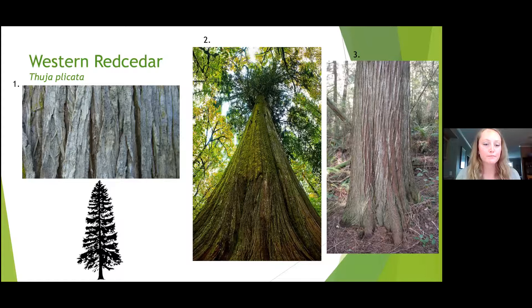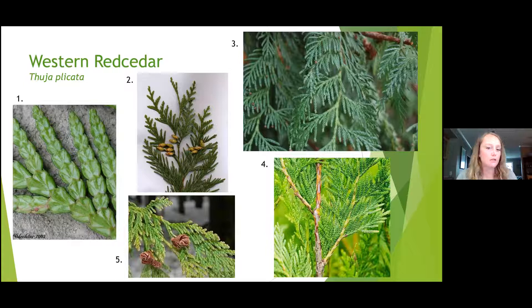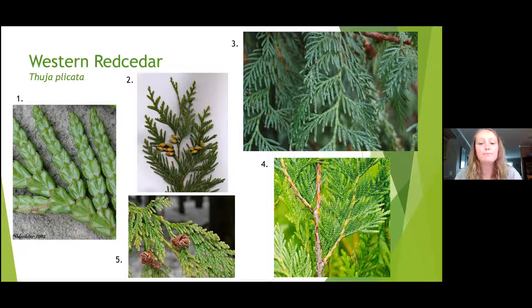Cedar is the only one that has these scale-like needles — that's the really quick way to ID a cedar besides the nice fibrous bark. The needles are really flat and they kind of grow in little scales one out of the other, fanning out from the stem. As you can see in photos number two and five, they have really small cones, only about a centimeter long. They grow in little clusters at the end of each needle branch and only have a few little scales on them — quite petite little cones.